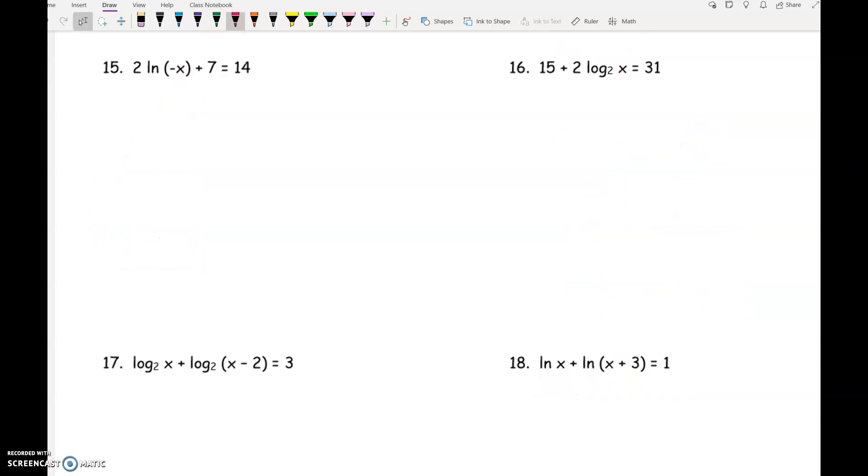Number 15 is our first example where the log is not isolated. You want to get this LN of negative x by itself. So first we're going to subtract 7 on both sides. Then we're going to divide by 2. And I know that my answer is going to be a decimal, so I'm going to go ahead and write 7 halves as the decimal 3.5.